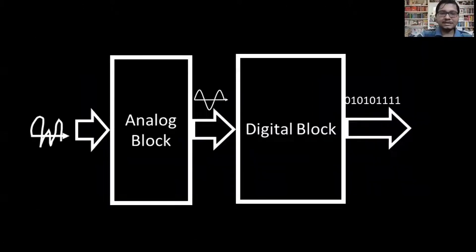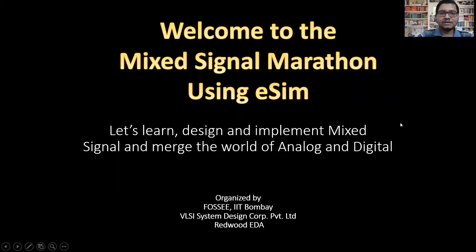To build a mixed signal system, one needs an analog block and a digital block — an analog circuit and a digital circuit — and one needs to give an input signal as analog and get the output as digital. Welcome to the mixed signal marathon using eSim, where we can learn, design, and implement mixed signal and merge the world of analog and digital. Thank you.